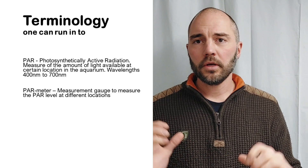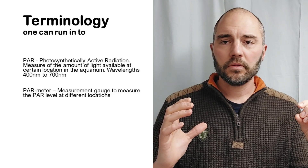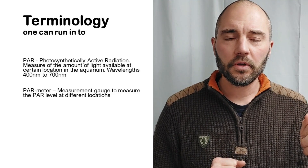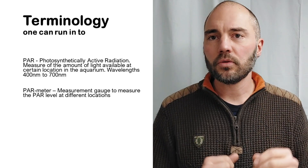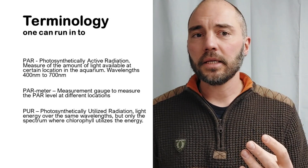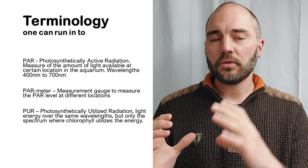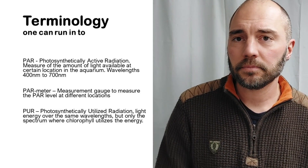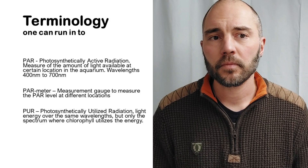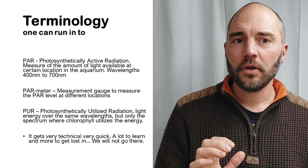Now PAR covers the visible spectrum. But complexity adds further and you will also probably encounter discussions about PUR. What is PUR? That is photosynthetically utilized radiation — the light energy over the same wavelength but only the spectrum where chlorophyll utilizes the energy. It's typically higher in the blue range. Now it gets very technical very quickly, and there's a lot to learn and even more to get lost in. We will not continue down this path for a basic course.